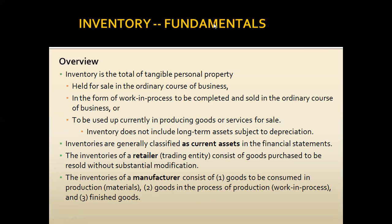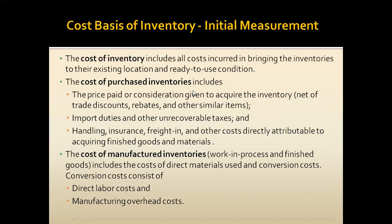How we classify inventories in financial statements: we show them as current assets. For a retailer, we have only one kind of inventory — finished goods inventory. For a manufacturer, we will have three kinds of inventory, as explained earlier.